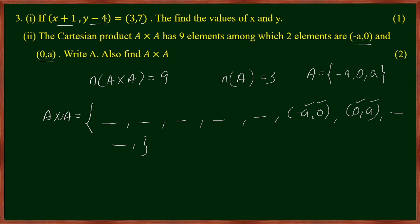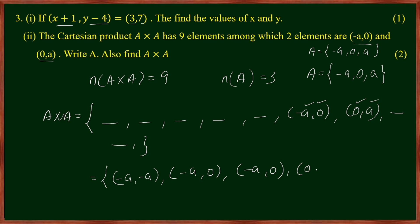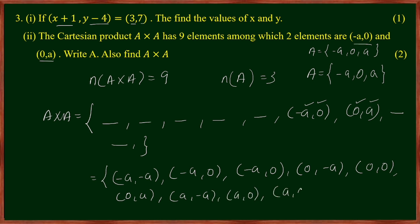The elements of A are: A, 0, minus A. So A cross A contains pairs such as (A, A), (A, 0), (A, minus A), (0, A), (0, 0), (0, minus A), (minus A, A), (minus A, 0), (minus A, minus A). So 1 cross A is equal to 3, giving 9 elements total in A cross A.